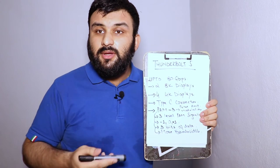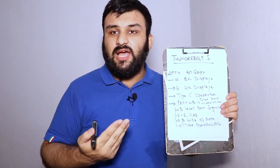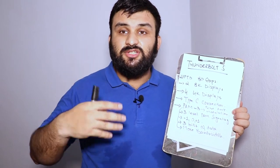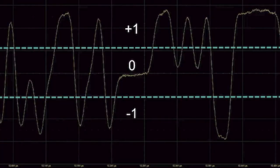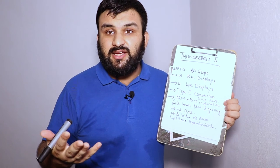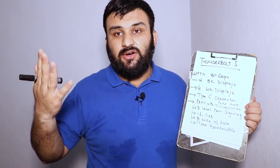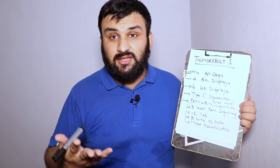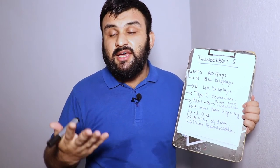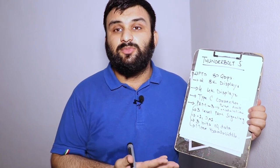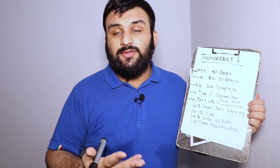Thunderbolt 5 uses PAM3 — Pulse Amplitude Modulation — which uses three signal levels: minus one, zero, and one. That means it uses three bits of data, which translates to more bandwidth. The theoretical speed of Thunderbolt 5, according to leaks, is 80 gigabits per second, compared to 40 gigabits per second on Thunderbolt 3 and 4.